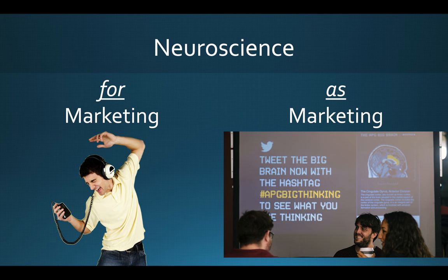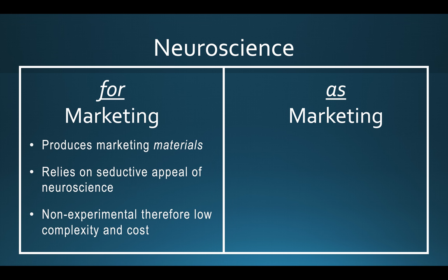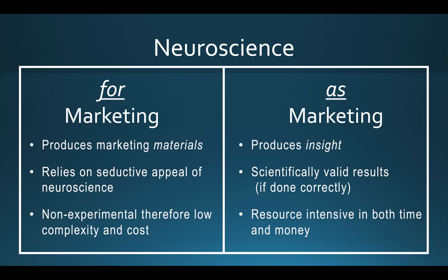To recap: there's a difference between using neuroscience for marketing and using neuroscience as marketing. Using neuroscience for marketing is when you're producing insight — you need scientifically valid results, which means doing it correctly, and that is resource-intensive in both time and money to ensure you can draw valid conclusions. In contrast, when you use neuroscience as marketing, all you're doing is producing marketing materials — some cool visuals or facts — relying on the seductive appeal of neuroscience. Since it's a demonstration rather than producing novel insights, it tends to be much lower complexity and much lower cost, which means you can do it faster and on a much cheaper budget.